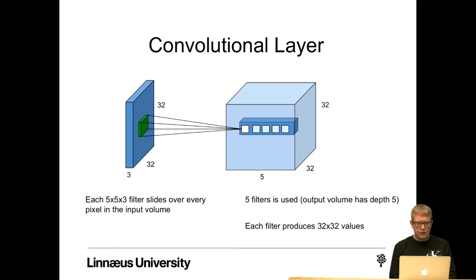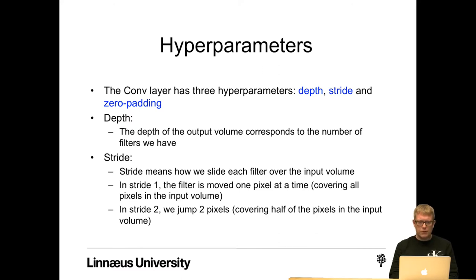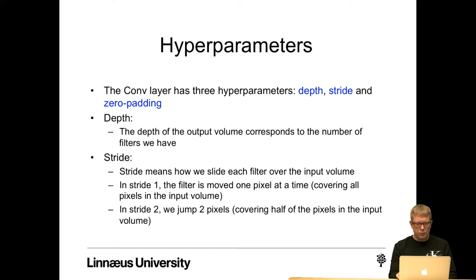The first filter produces a 2D activation map at depth 1 in the output volume. The second filter slides over the input volume and produces an activation map at depth 2. The third filter produces an activation map at depth 3 in the output volume. The conv layer has three settings, or hyperparameters: the depth, the stride, and zero padding. The depth is simply the depth of the output volume, which corresponds to the number of filters. Stride means how we slide each filter over the input volume: in stride 1, the filter is moved one pixel at a time, covering all pixels; in stride 2, we jump two pixels, covering half the pixels, resulting in a smaller output volume.